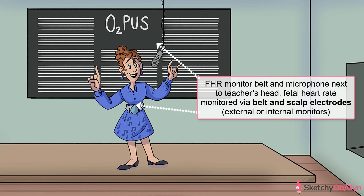In terms of instruments used for monitoring, there are two types: external and internal. External monitoring looks like a belt that lays over mom's belly with a Doppler ultrasound attached that picks up the fetal heart rate — our music teacher is wearing one just like it! Internal monitoring is a fetal scalp electrode attached to the baby's scalp, which we'll remind you of with a microphone near our music teacher's scalp.